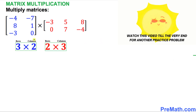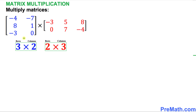In the very first step we are going to focus on the dimensions of these two matrices. The blue matrix on the left hand side has three rows and two columns, so we call it a three by two matrix. The red matrix on the right hand side has two rows and three columns, so we call it a two by three matrix.